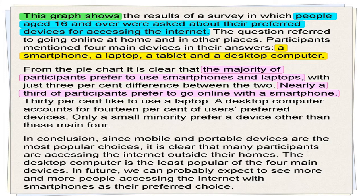Only a small minority prefer a device other than these main four. In conclusion, since mobile and portable devices are the most popular choices, it is clear that many participants are accessing the internet outside their homes. The desktop computer is the least popular of the four main devices, and more people access the internet with smartphones as their preferred choice.